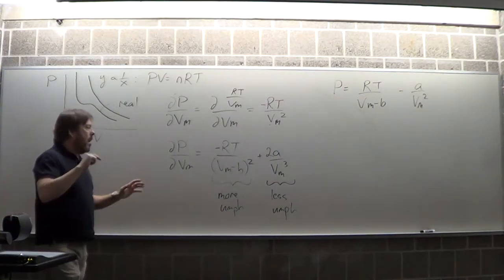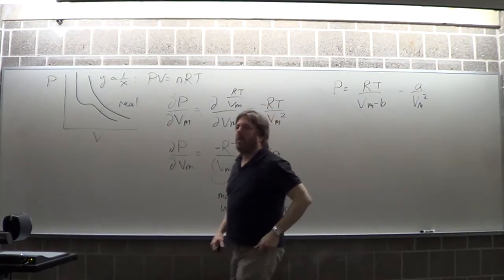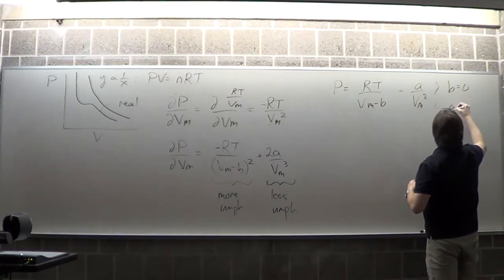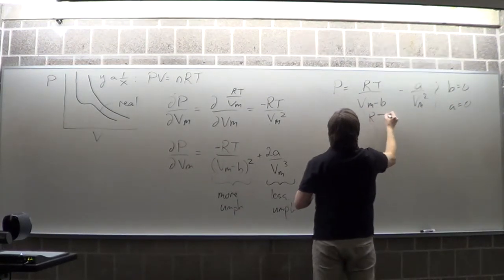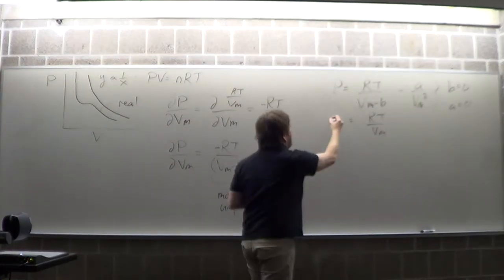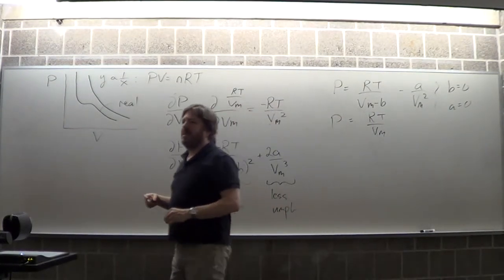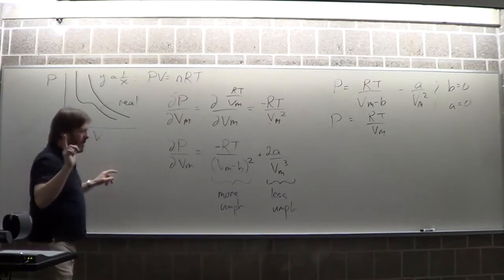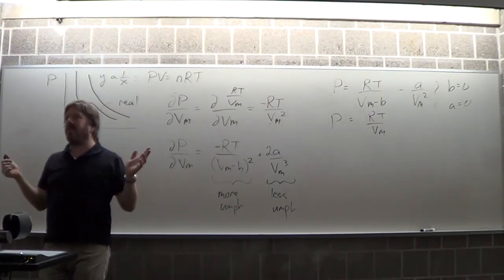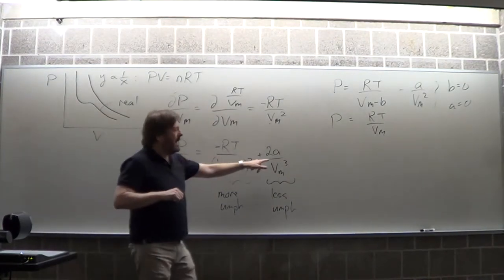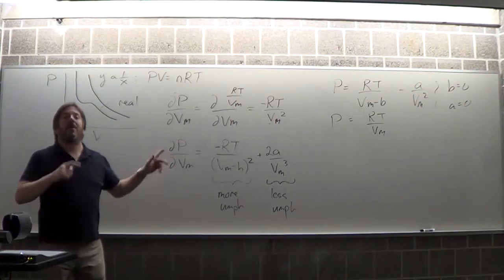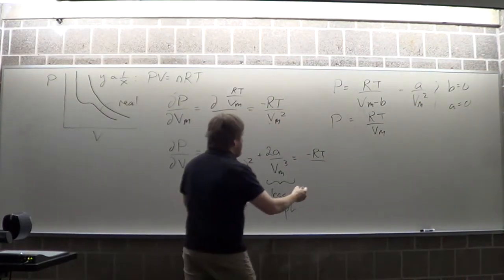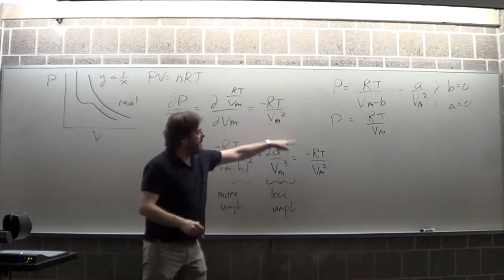Here's another question: all real gas equations ought to collapse into a perfect gas when a = 0 and b = 0. For the Van der Waals equation, RT/(V_M − 0) minus 0 just gives RT/V_M, which is the perfect gas equation. That applies to derivatives and integrals too. If I plug in b = 0 and a = 0 into the derivative, the −RT/(V_M − b)² term becomes −RT/V_M², and the A term vanishes — same as the perfect gas derivative. It all works.